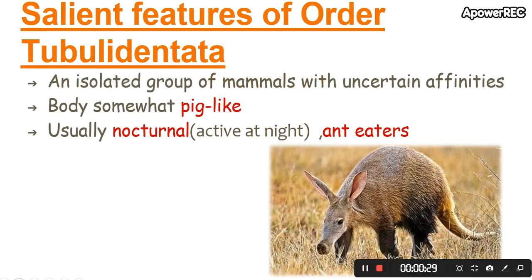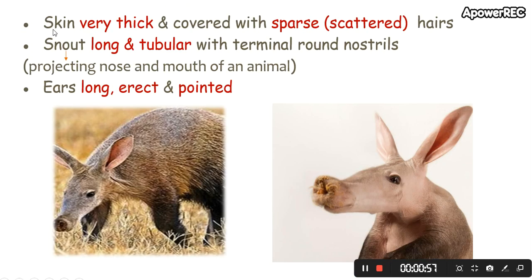Now we are going through the salient features of Order Tubulidentata. First, they are an isolated group of mammals with uncertain affinities. Their body is somewhat big, as shown in this picture. They are usually nocturnal — nocturnal means they are active during night — and they are anteaters. The skin is very thick and covered with sparse hair.